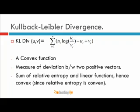This is the exact mathematical model of KL divergence between two vectors. Given two n-dimensional positive vectors u and v, the KL divergence is: summation over i from 1 to n of u_i log(u_i / v_i) minus u_i plus v_i. This is a convex function because it is the sum of a convex function and a linear function.